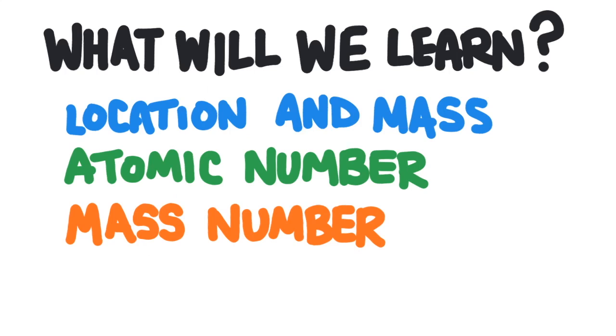So what are we going to learn in this video? First we will learn the location and mass of the proton, neutron, and electron. Then we will learn how to describe atoms of different elements using two numbers, the atomic number and the mass number. At the end of the video there will be a few problems so we can check your understanding.